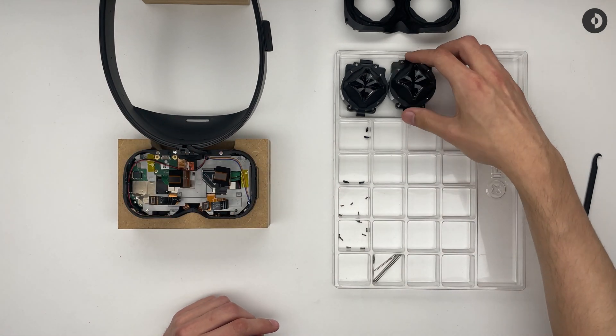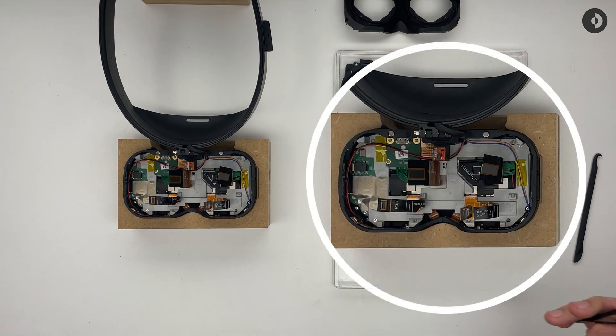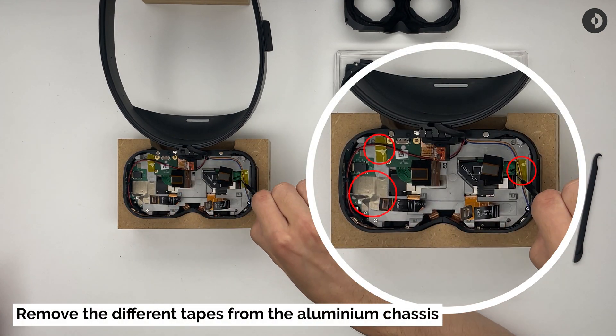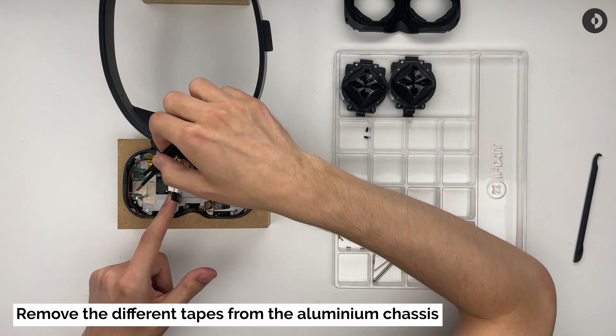You now have access to the aluminum chassis holding everything together. Remove all pieces of polyamide tape you will find attached to it.